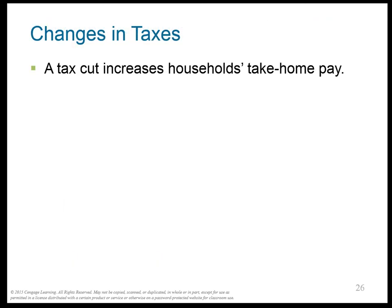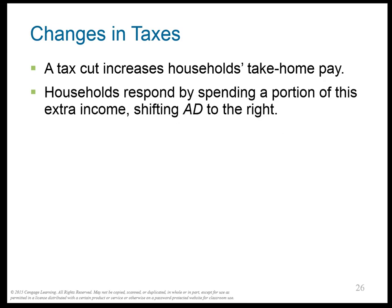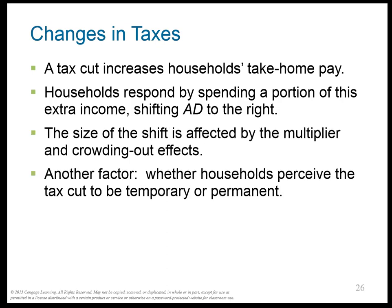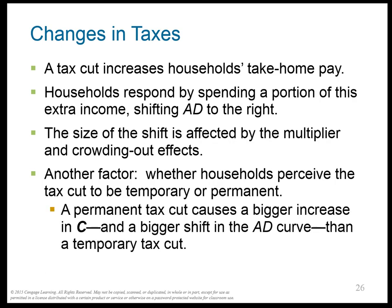Another fiscal policy tool is changing the tax rate. If taxes are cut, it increases take-home pay, people spend more of it, and the AD curve shifts to the right. The size of the shift is affected by the multiplier and crowding out effects. Also important is whether households perceive the tax cut as temporary or permanent — a permanent tax cut shifts the AD curve to the right more, while a temporary tax cut doesn't increase spending as much because people anticipate paying it back.